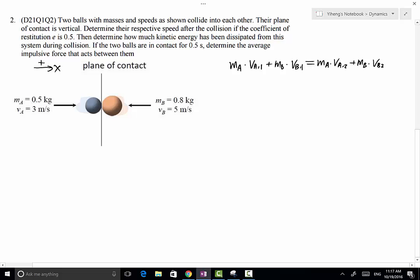Substituting the known values: ball A has mass 0.5 kg and initial velocity 3 m/s, ball B has mass 0.8 kg but its initial velocity is in the negative x direction. So 0.5(3) - 0.8(5) = 0.5·VA2 + 0.8·VB2.